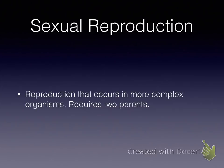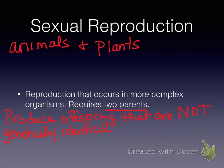Moving on to sexual reproduction: it's the reproduction that occurs in more complex organisms, it requires two parents, produces offspring that are not genetically identical, and this occurs in plants and animals.